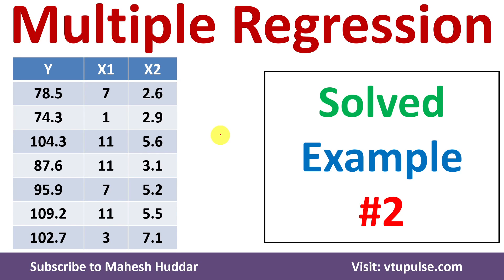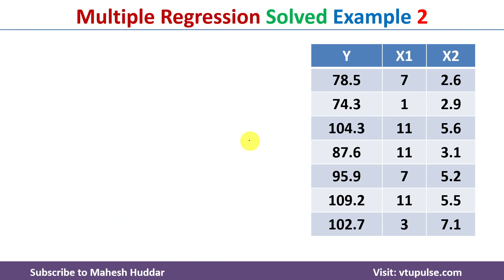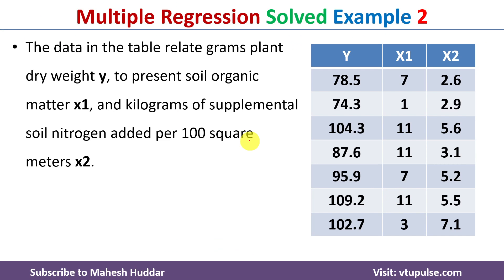Welcome back. In this video I will discuss how to apply multiple regression on a given dataset to predict the value of a dependent variable given the values of independent variables. This is solved example number two; links for other examples are given in the description below. We have a dataset with one dependent variable and two independent variables: plant dry weight (y) is the dependent variable, and the independent variables are soil organic matter (x1) and soil nitrogen (x2).